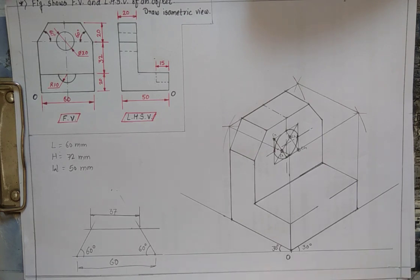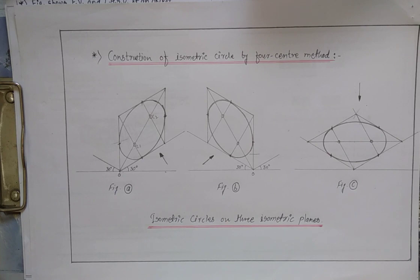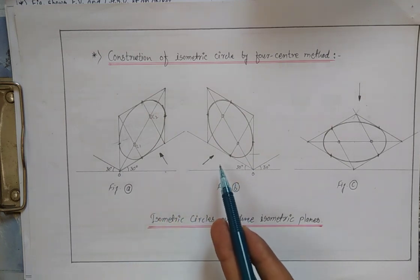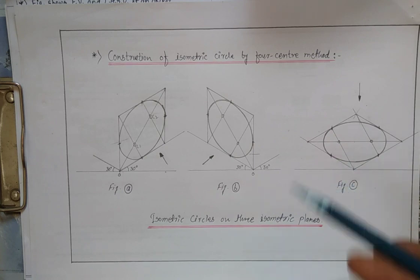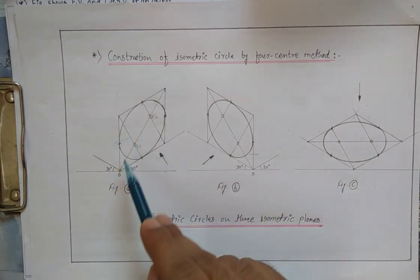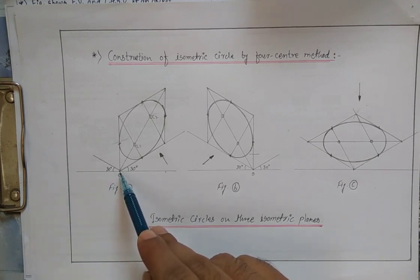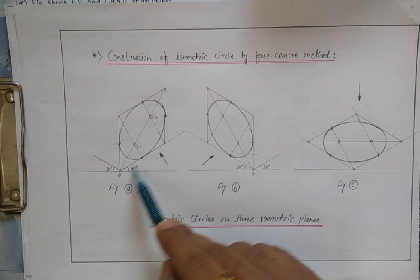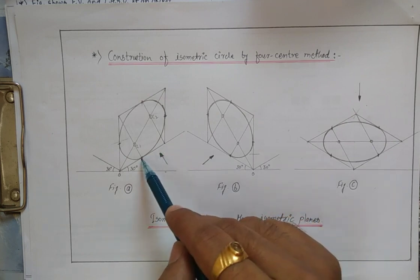To illustrate further: the four-center method applies to all three isometric planes — the right plane, the left plane, and the top plane. In whichever plane you need to construct the circle, first prepare a square box with side equal to the diameter, mark mid-points on all sides, then follow the stepwise four-center procedure. Here the box is 20 × 20 mm since the diameter is 20 mm.